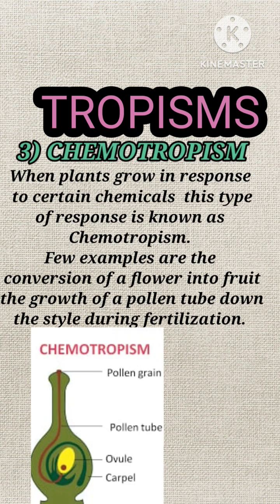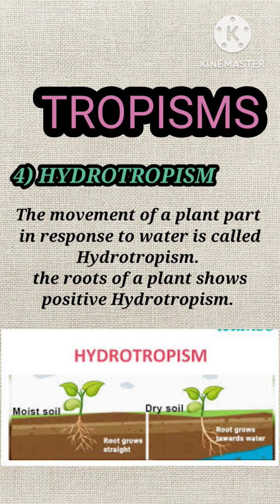Chemotropism: when a plant grows in response to certain chemicals, this type of response is known as chemotropism. Hydrotropism: the movement of a plant part in response to water is called hydrotropism.